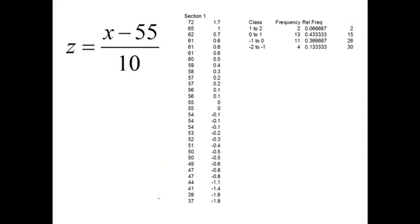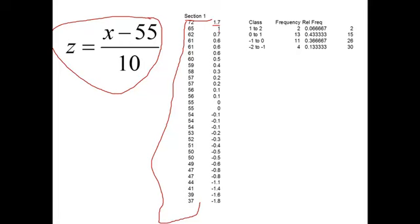Now let's take a whole section, this is section 1, and standardize all the scores. I put the scores in order from highest to lowest, and then I've taken the z-score. I've applied this formula to each and every one of them. Notice the standardized scores are just fairly small numbers.